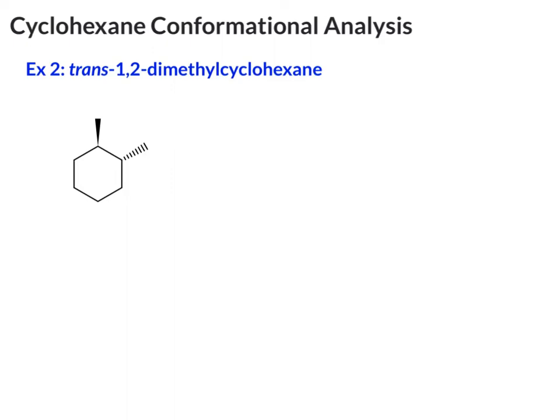In this example, we have three dimensionality in the ring. We see that one methyl is out, one methyl is back. So this is going to lock us into how we draw these groups on the chair. So like we did before, let's start by numbering our ring.